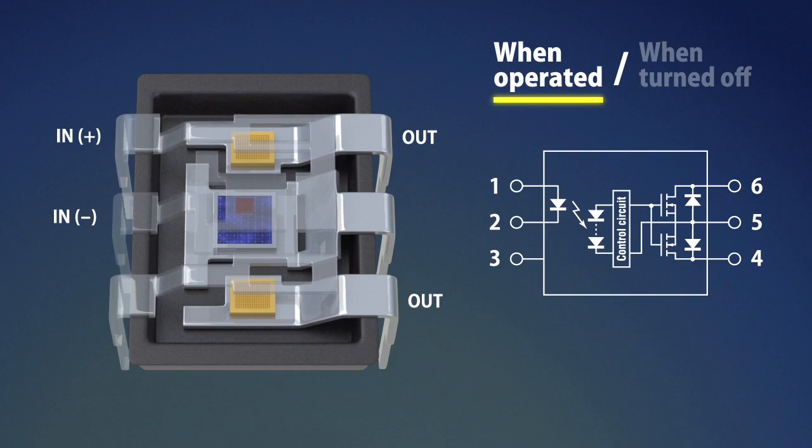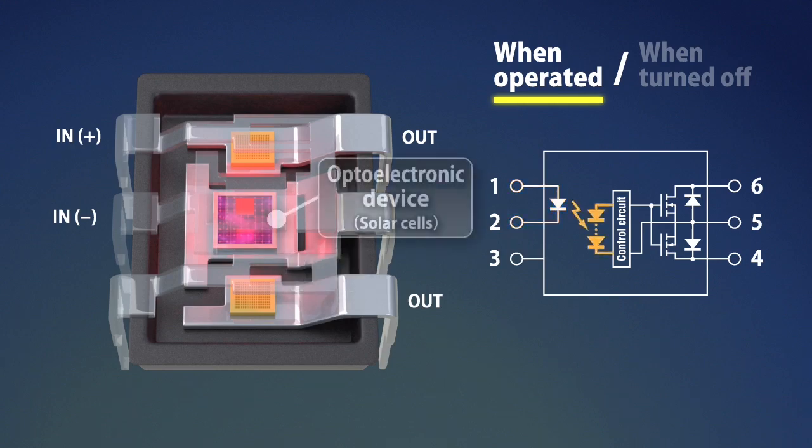How PhotoMOS operates: During operations, when current flows to the input terminal, the LED on the input side emits light. The emitted light passes through transparent silicon and reaches the photoelectric element which is mounted opposite to the LED.